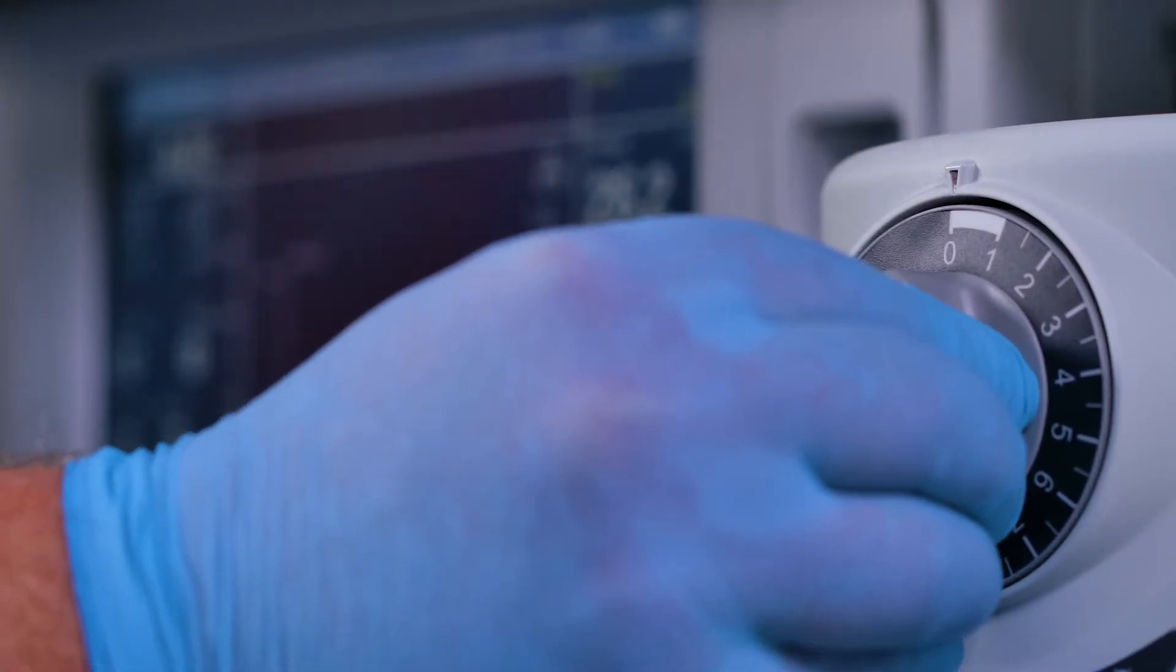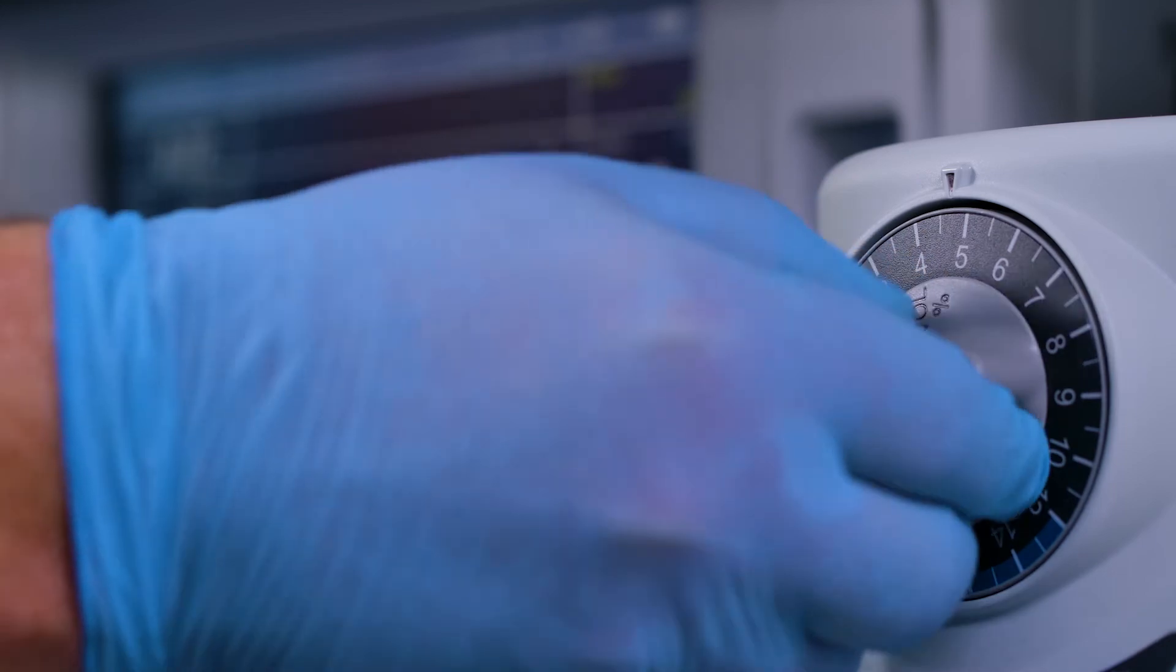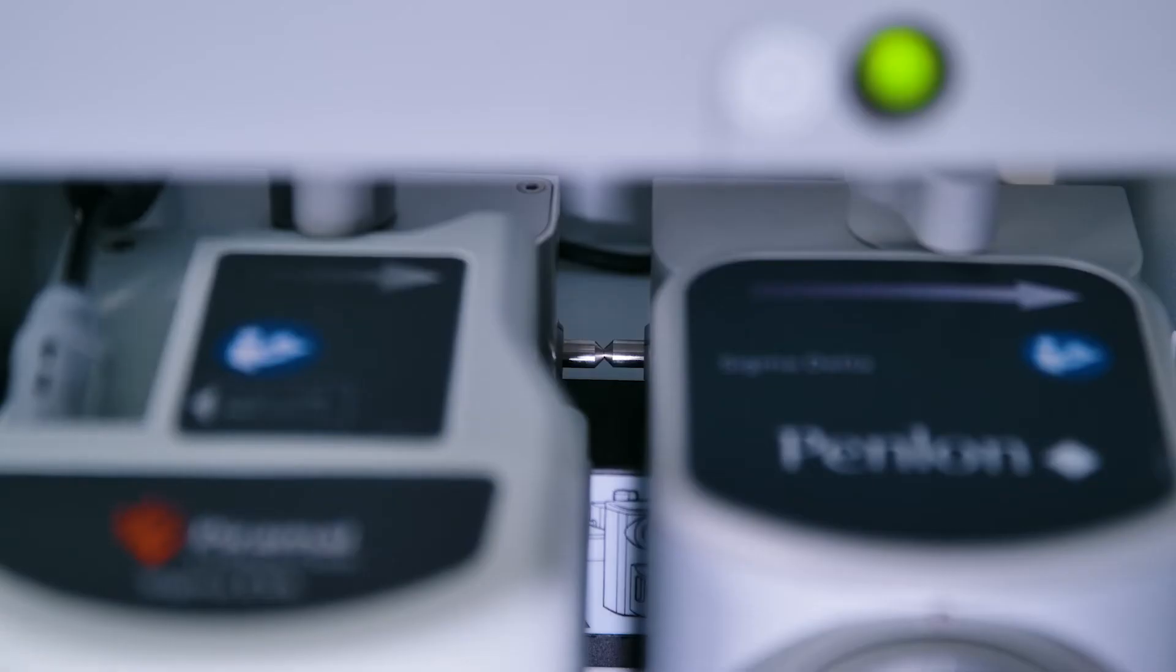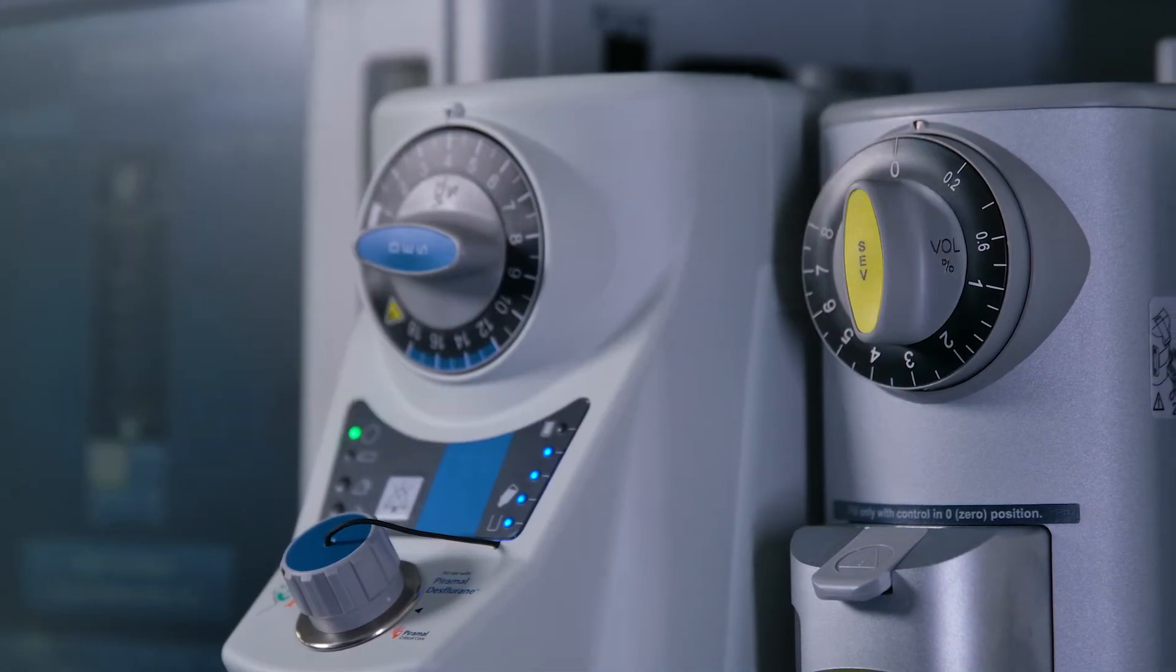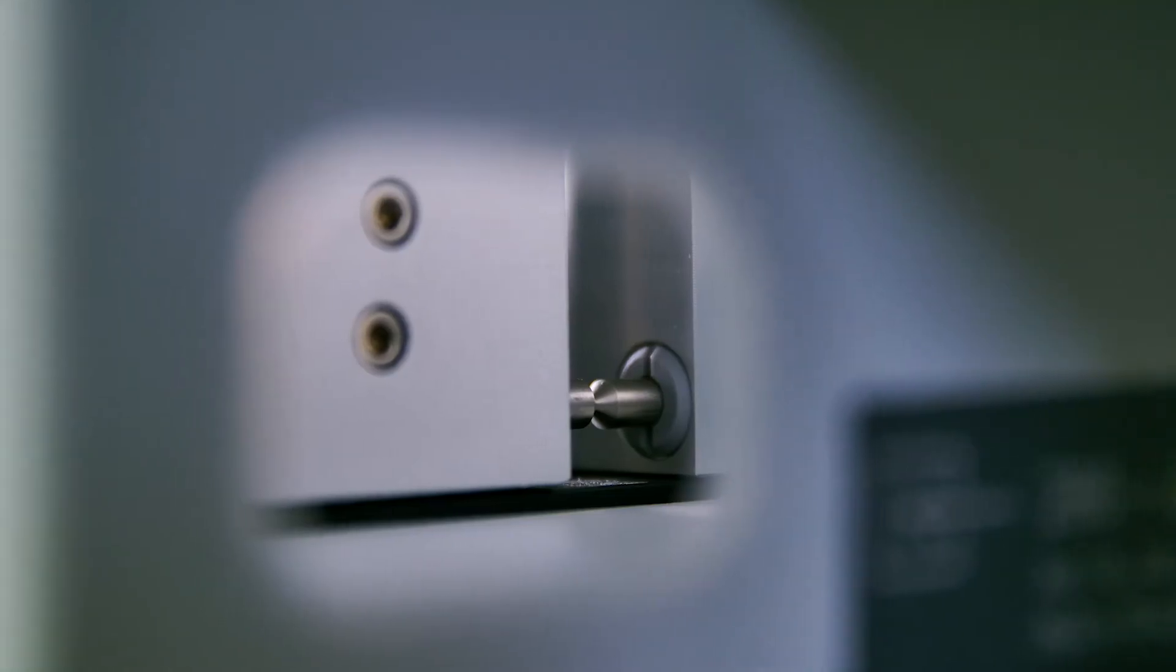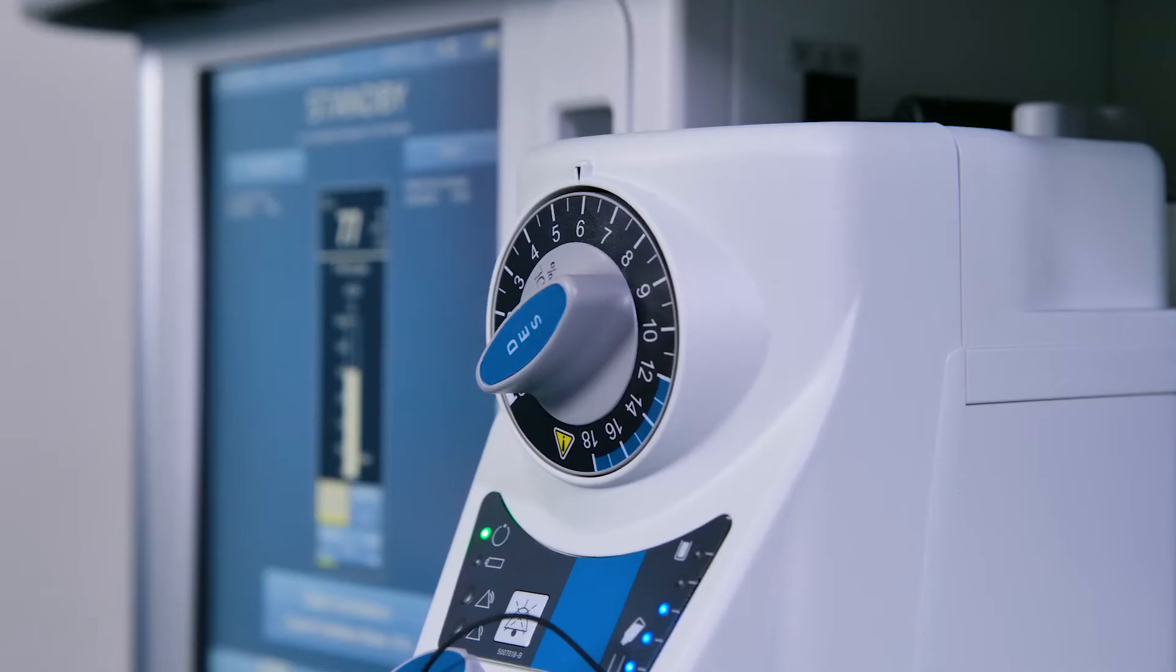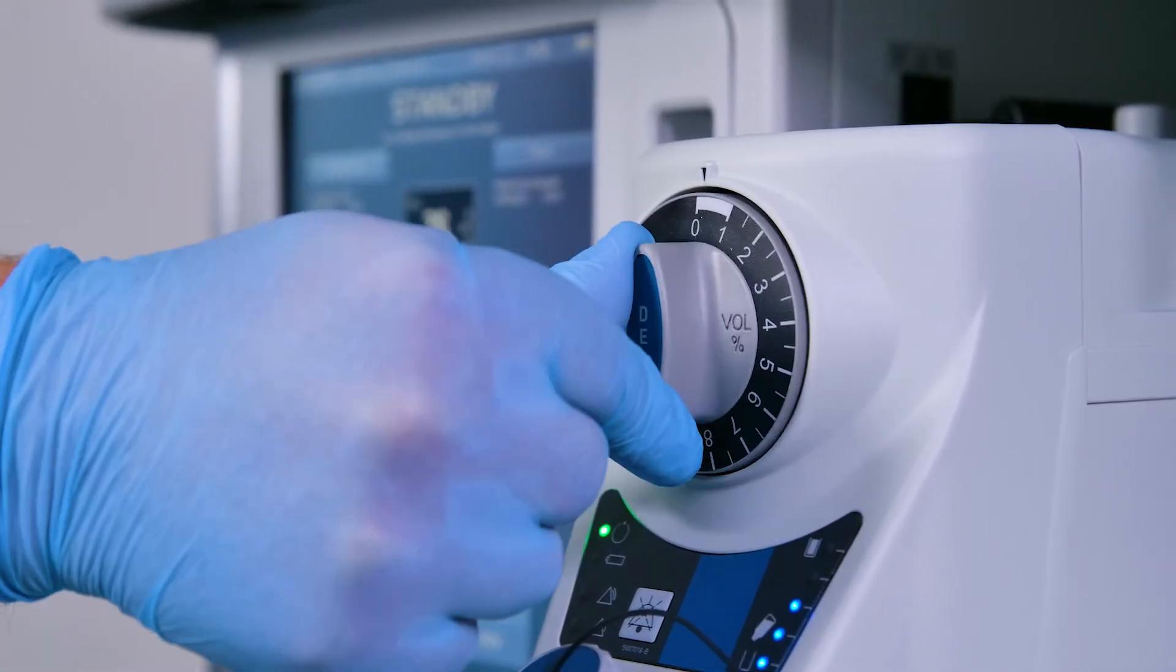Push in the concentration control dial and rotate anti-clockwise. Check that the interlock bolt moves outwards so that only one vaporizer at a time can be turned on. Check that the interlock deactivates when the control dial is returned to the locked out zero position.